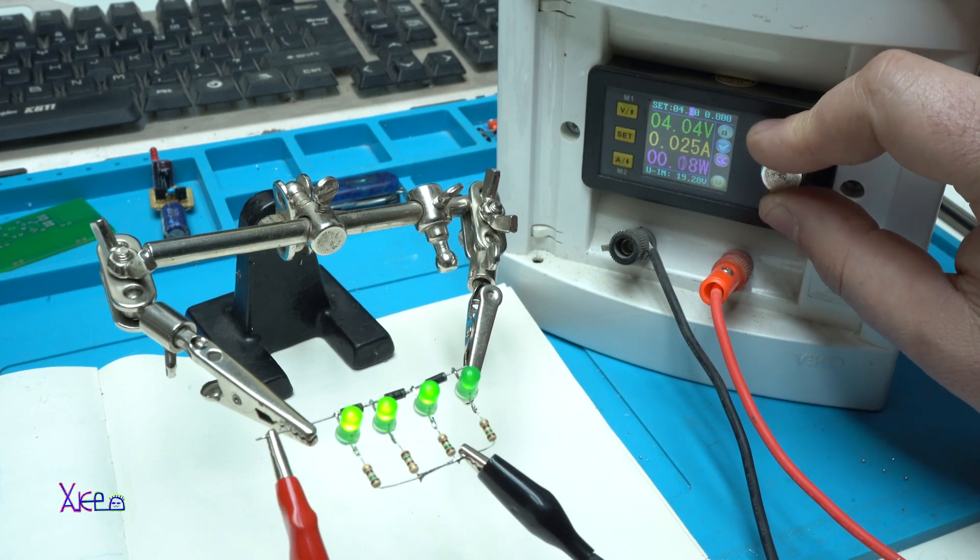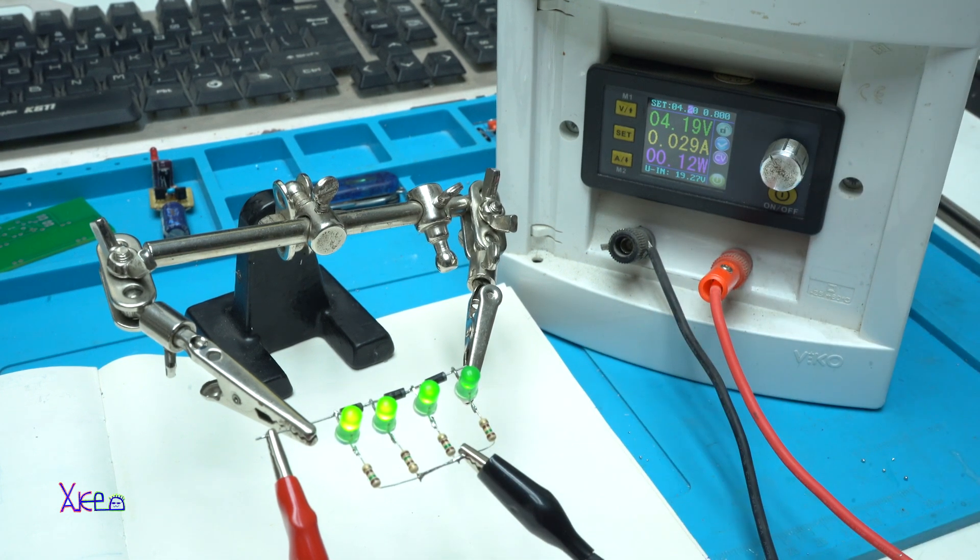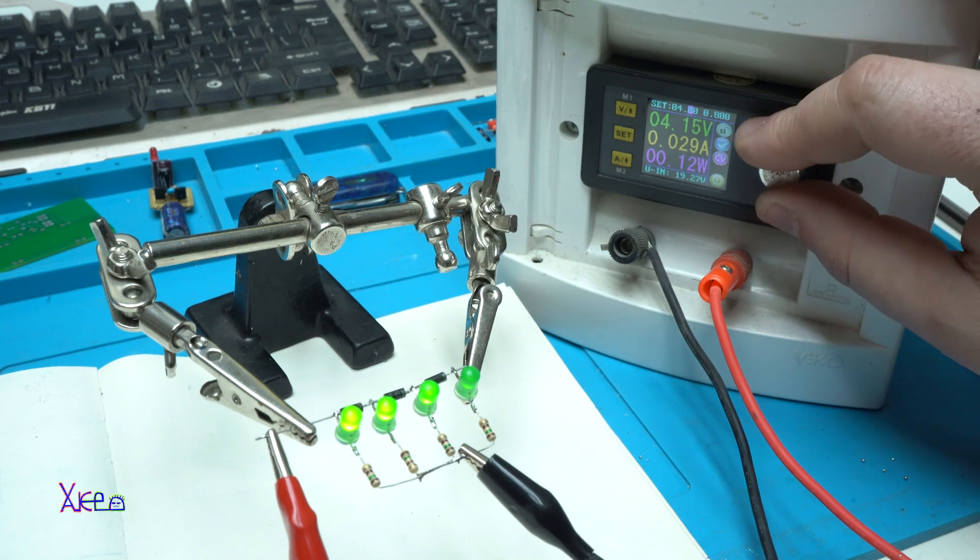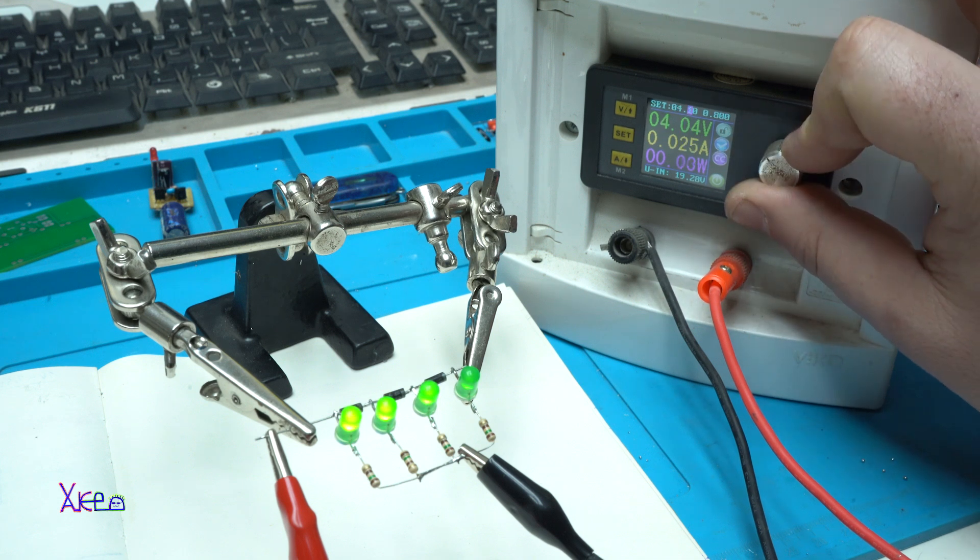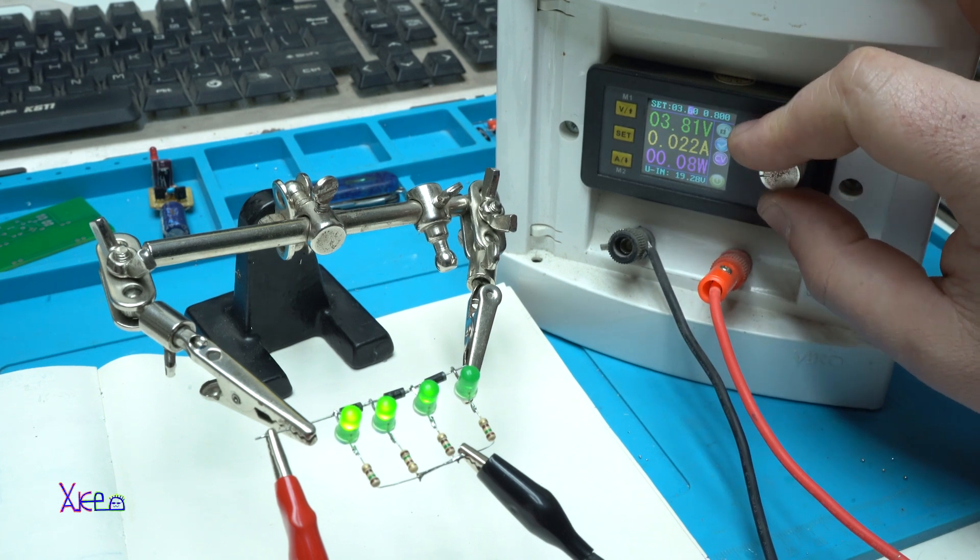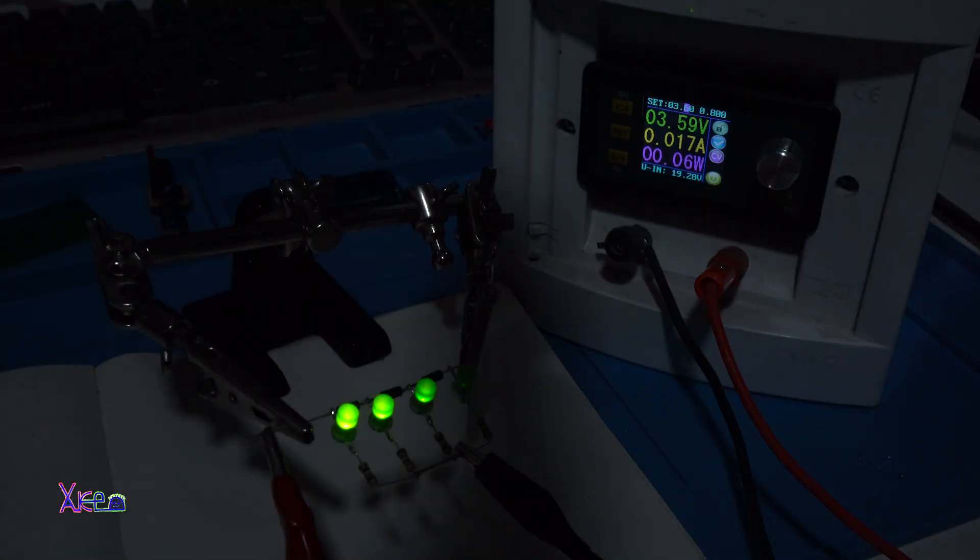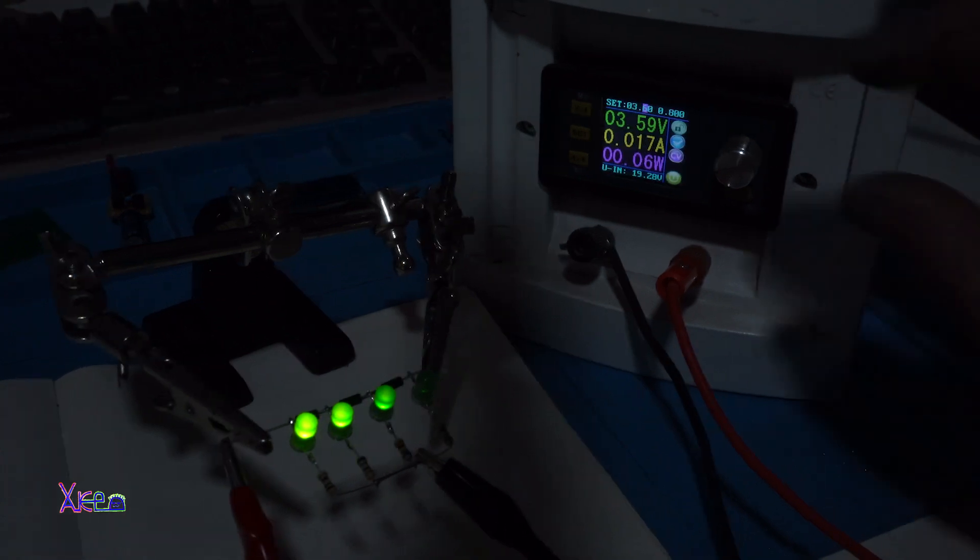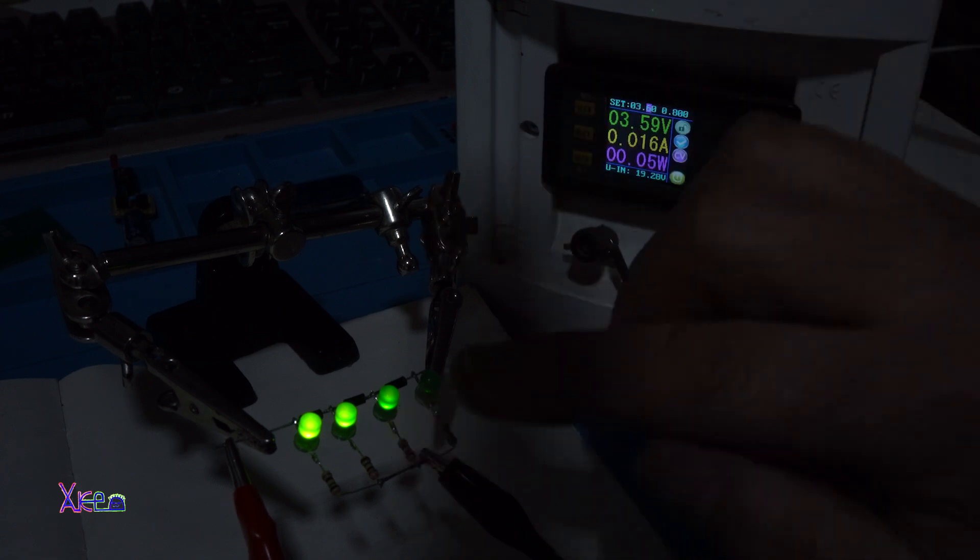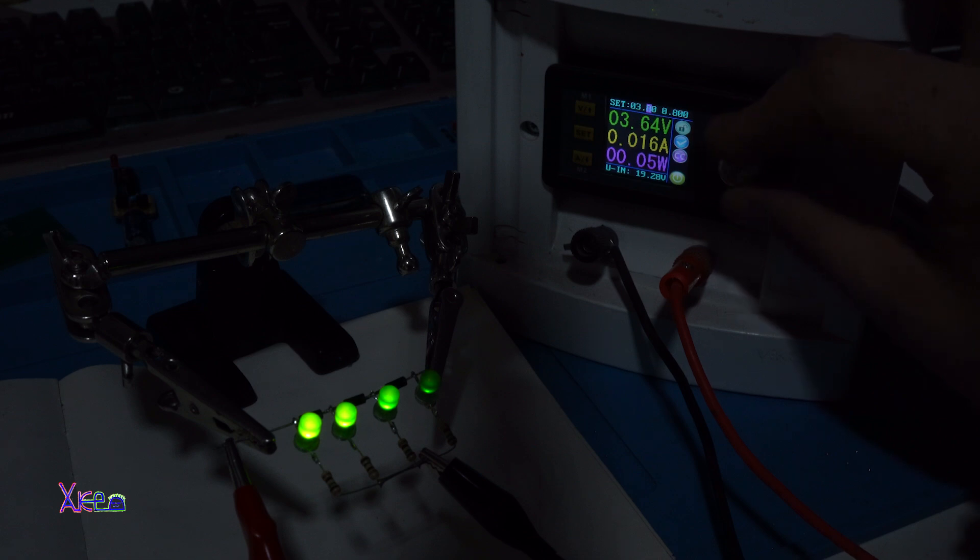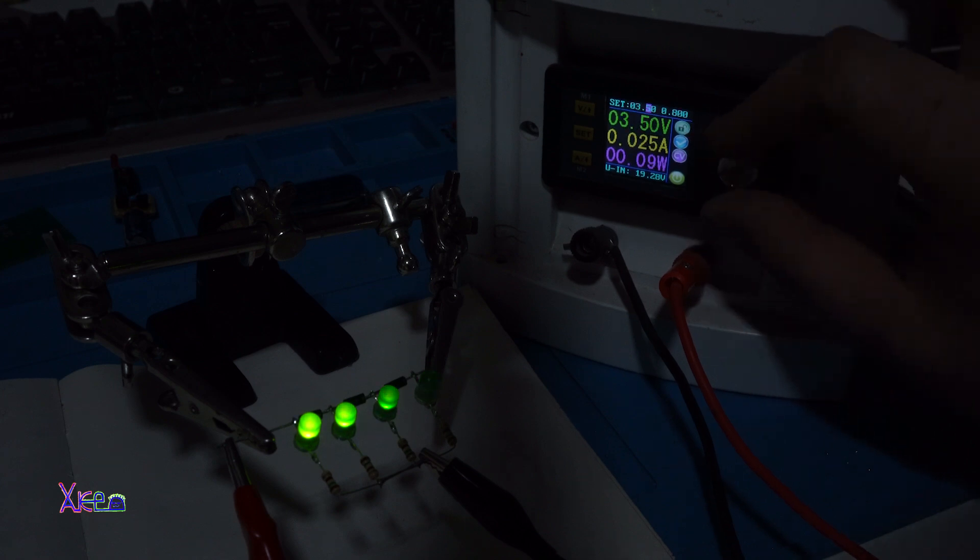all LEDs are turned on indicating a full battery. Yes, working fine. Just to turn off the lights so you can see better. 3.6 volts, we have three fully lit up LEDs. At 4.2, four LEDs. Minimum voltage